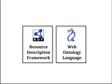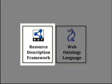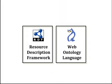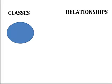The two standards which govern the construction of ontologies are the Resource Description Framework, or RDF, and the Web Ontology Language, or OWL. In accordance with RDF and OWL, ontologies are made up of two main components: classes and relationships. Classes are represented as ovals, while relationships are represented by arrows.